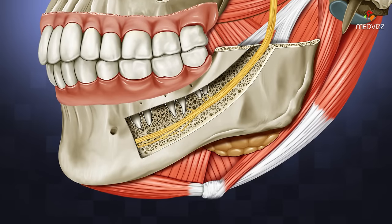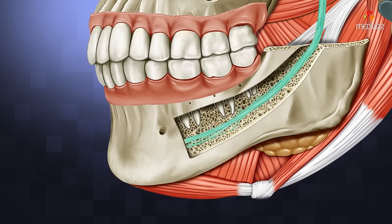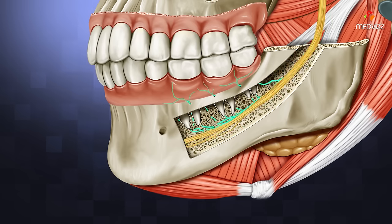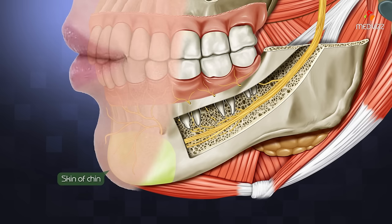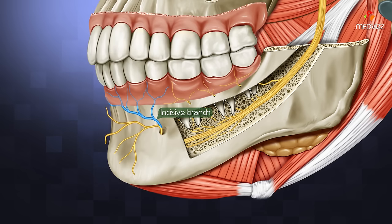While running in the mandibular canal, the inferior alveolar nerve gives branches that supply the lower teeth and gums. The mental nerve emerges at the mental foramen and supplies the skin of the chin and the skin and mucous membrane of the lower lip. Its incisive branch supplies the labial aspect of the gums of the canine and incisor teeth.